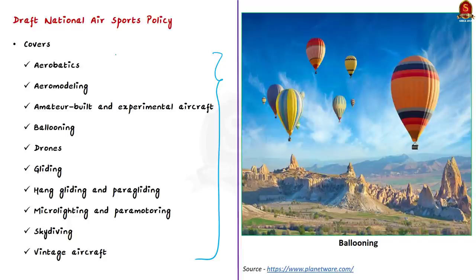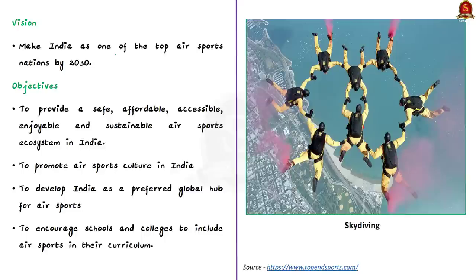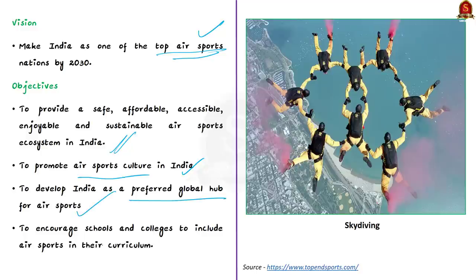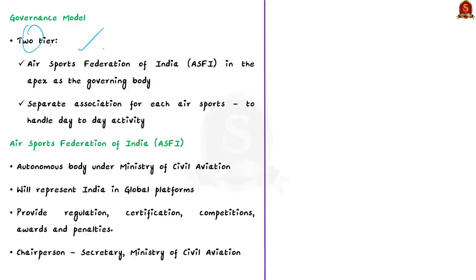The vision of the policy is to make India one of the top air sports nations by 2030. The government aims to provide a safe, affordable, accessible, enjoyable, and sustainable air sports ecosystem, promote air sports culture, develop India as a preferred global hub, and encourage schools and colleges to include air sports in their curriculum. The policy proposes a two-tier governance model: an apex-level Air Sports Federation of India as the governing body, plus separate associations for each individual air sport handling day-to-day activities.